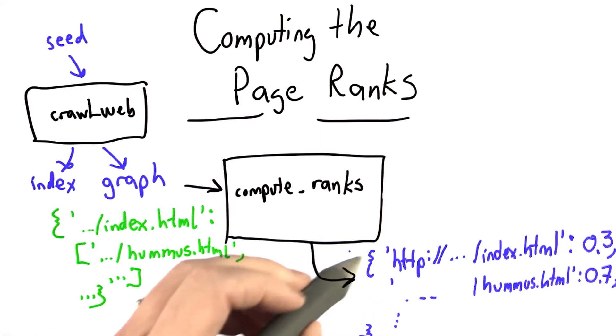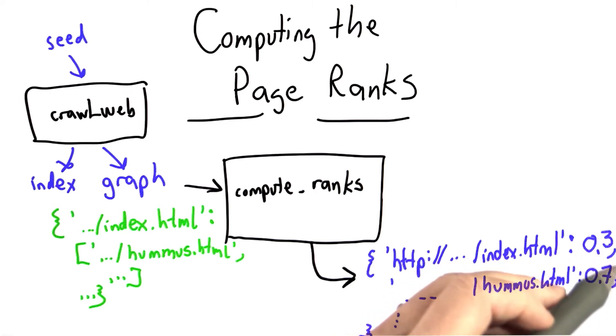The output from compute_ranks will be a dictionary, giving for each URL its rank, the ranking that we compute using our formula. And the higher the rank, the better.